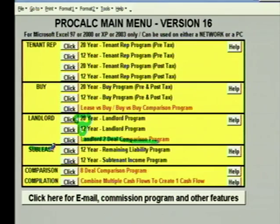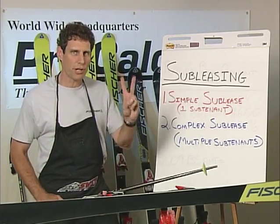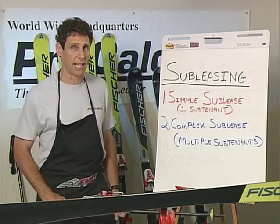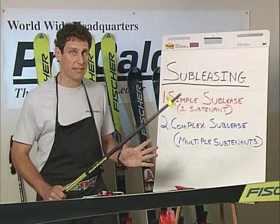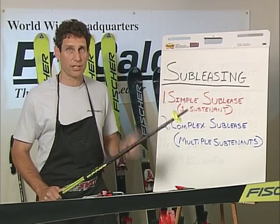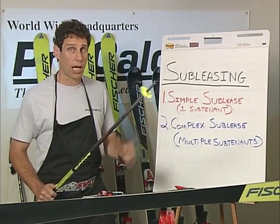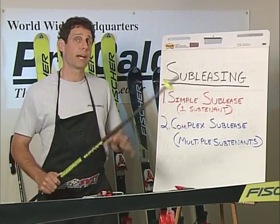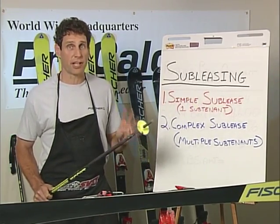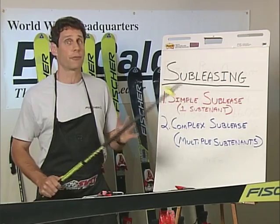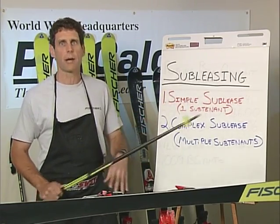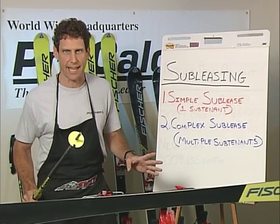We also have a sublease package. ProCalc allows you to do two kinds of subleasing. You could do simple subleasing where you have one subtenant — for example, you have 5,000 square feet and you're going to sublease all 5,000 square feet to one subtenant. More complex subleasing is where you might have 20,000 square feet, break it up into four different units, find four different subtenants all starting on four different dates with four different base years, free rents, TIs, and commissions. ProCalc can handle it all — it's a piece of cake.